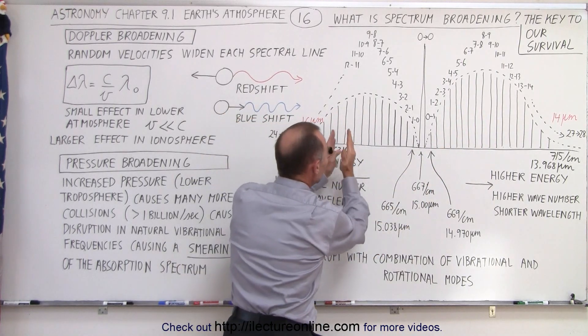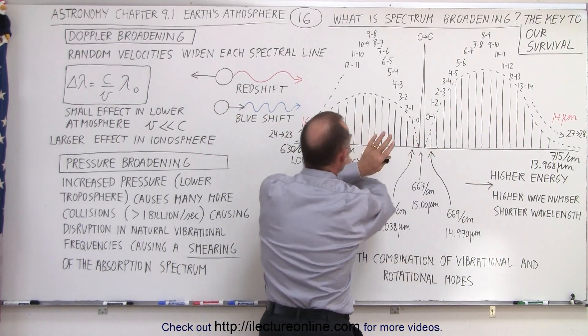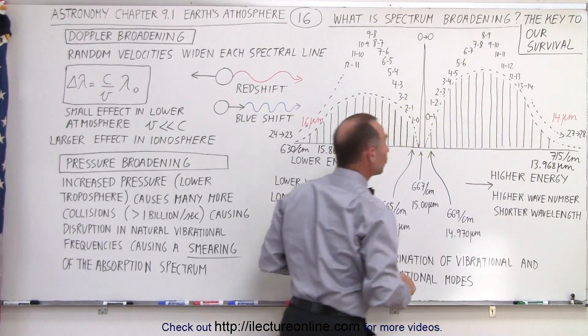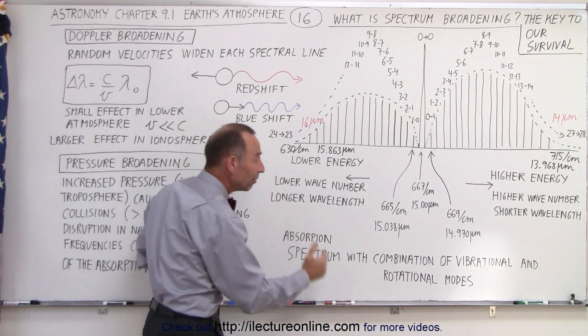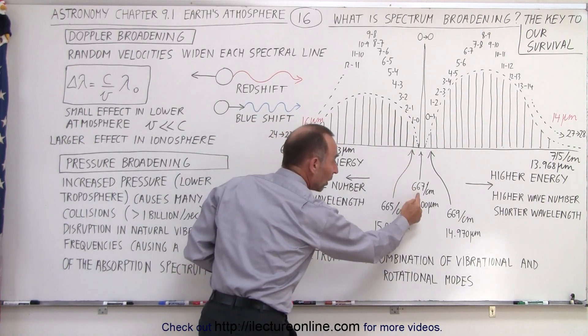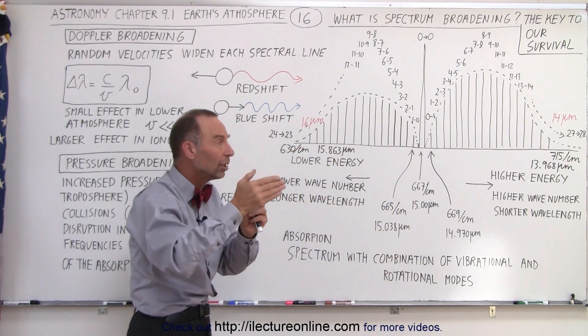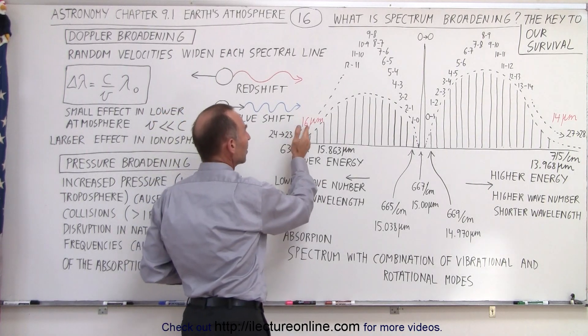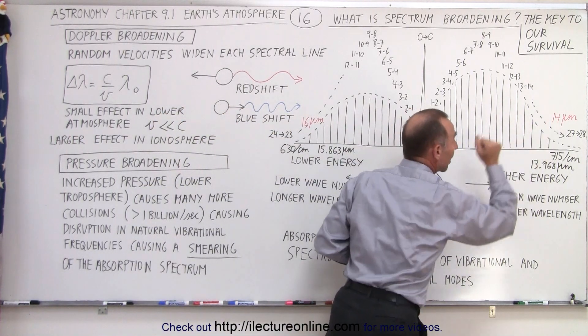And so instead of having just a very few select frequencies being absorbed, we get all these frequencies absorbed, all these wavelengths of radiation, in such a way that that one vibrational mode with this one quantum jump in energy can actually absorb radiation all the way from 16 micrometers down to 14 micrometers.